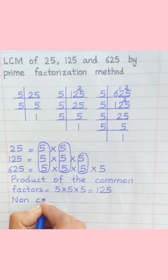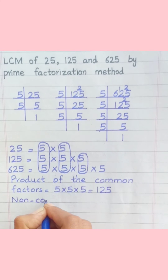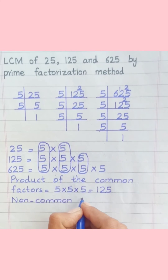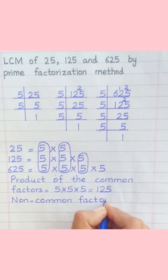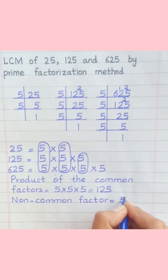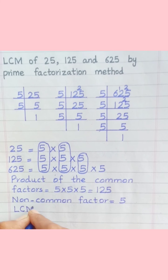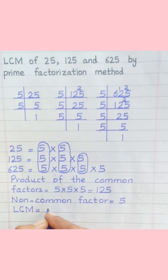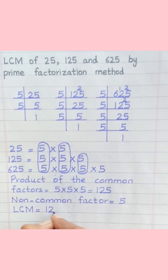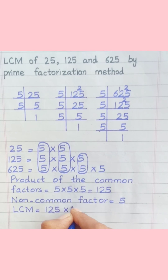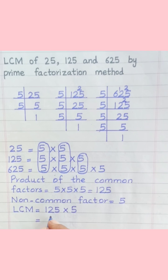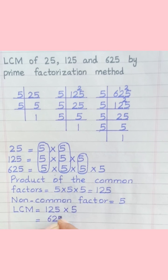625 has a non-common factor of 5. Non-common factor: 5 multiply 5 multiply 5. Therefore, 625 equals 625. LCM equals 625. Thank you.